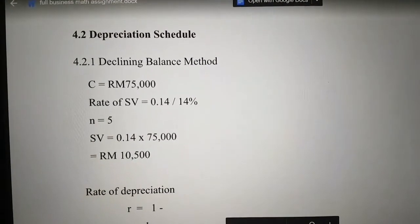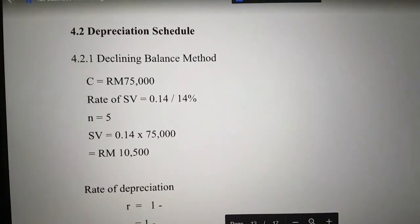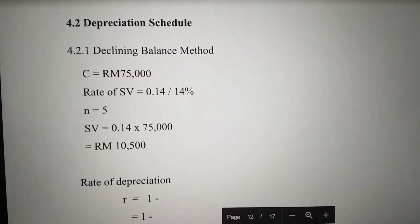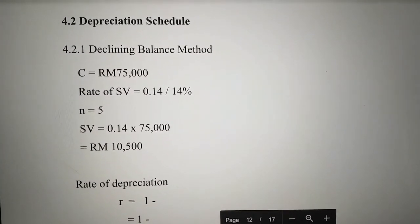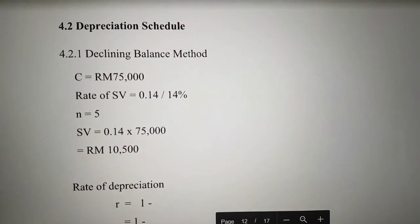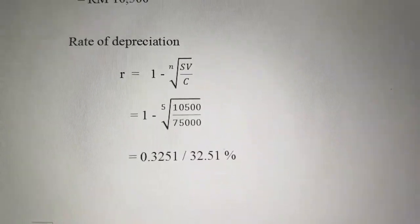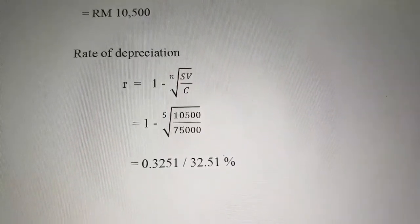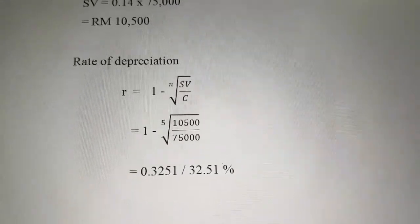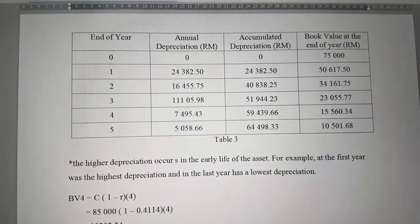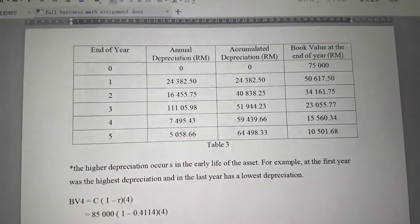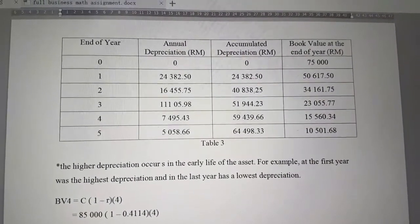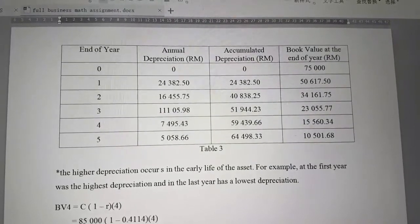For the depreciation schedule, Section 4.2.1 uses the Declining Balance Method. The cost of machinery is 75,000, rate of salvage value is 14%, and useful life is 5 years. The salvage value is calculated as 0.14 times 75,000, equalling 10,500. Using the declining balance formula, the rate of depreciation is 32.51%. Based on the schedule, higher depreciation occurs in the early life of the asset, with the first year having the highest depreciation and the last year having the lowest.